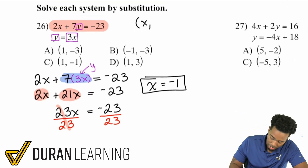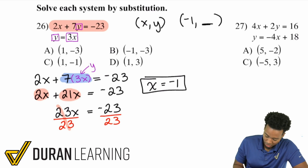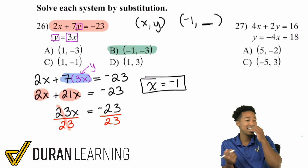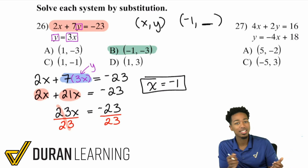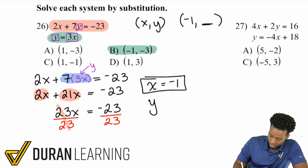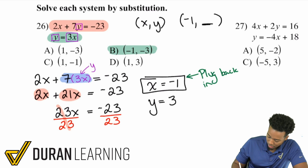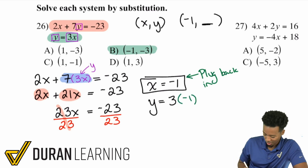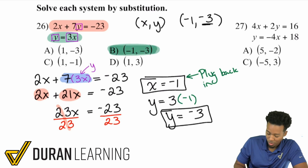So X is negative 1. When we write our answers, it's X comma Y in alphabetical order. Looking at the answer choices, the only answer that has negative 1 for X is B. But let's solve for Y anyway. We plug X back into the second equation: Y equals 3 times negative 1, which gives us Y equals negative 3. So the answer is negative 1 comma negative 3, confirming answer B.